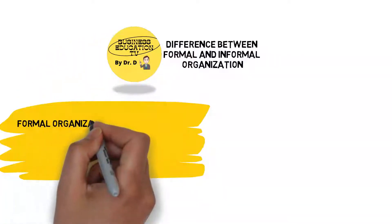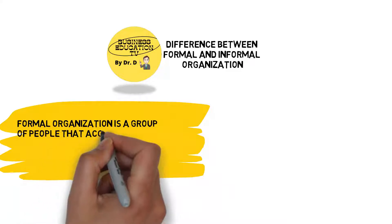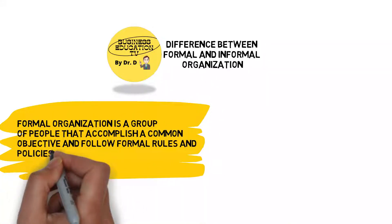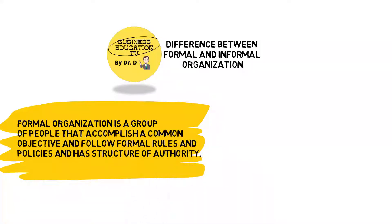Formal organization is a group of people that accomplish a common objective and follow formal rules and policies and has a structure of authority.